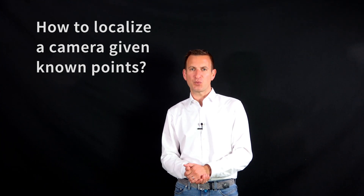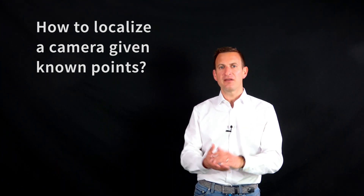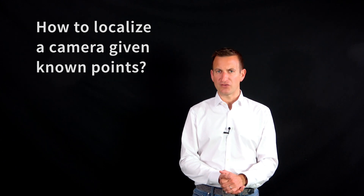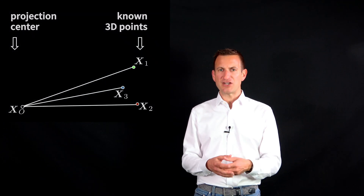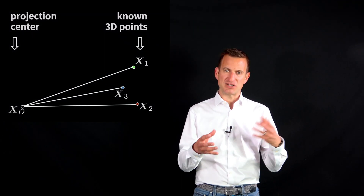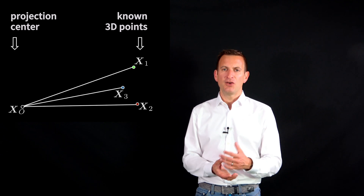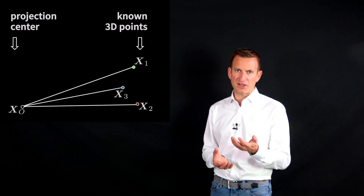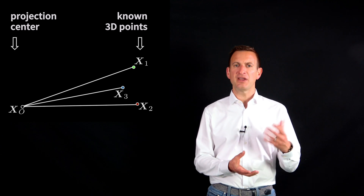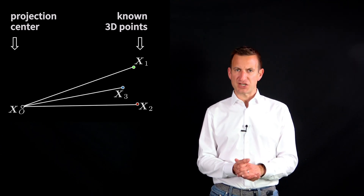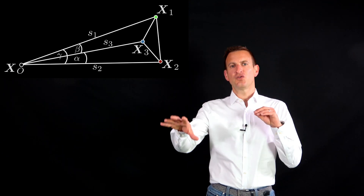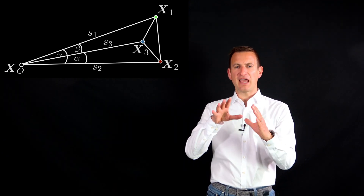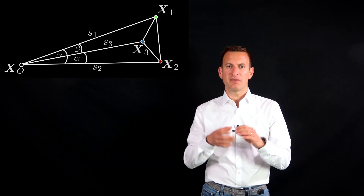The question is: how does it work? How can we estimate where the camera is given three known points in the world? We look at the geometric configuration that these points generate together with the projection center of the camera. Consider points x1, x2, x3 as the locations in the 3D world, and x0 as the projection center. From these, we can generate a tetrahedron — four triangles formed by connecting these individual points.